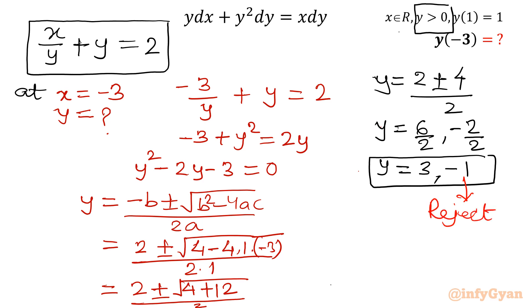We will reject this one. Why? Because y cannot be negative. This value is not accepted. Our answer will come out 3. For which we have calculated, for x equal to negative 3, y is coming out. So what we will write? y of minus 3 is 3.